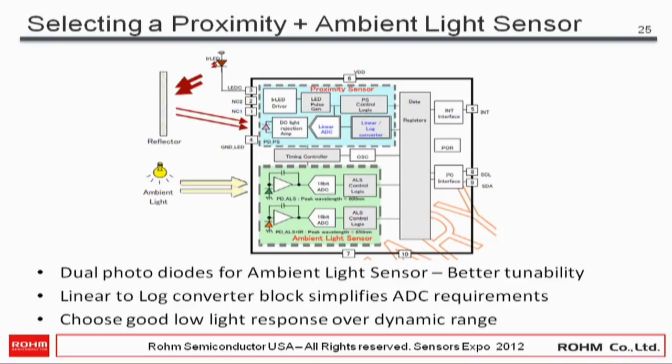For selecting a proximity plus ambient light sensor, this is a combo device: an ALS at the bottom with an infrared LED driver and receiver on top for proximity reading. Key features include dual photodiodes for the ALS for better tuneability, and a linear-to-log converter on the IR LED sensor path. This converter linearizes the sensor output, allowing a lower-cost ADC — eliminating the need for a 16-bit ADC, which reduces the cost of the proximity sensor.